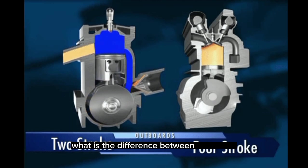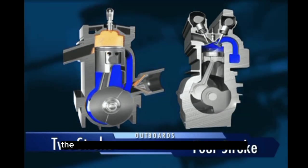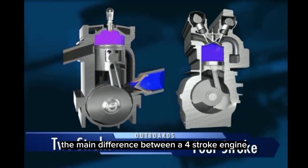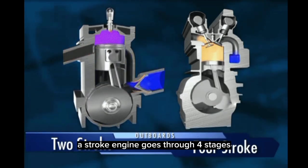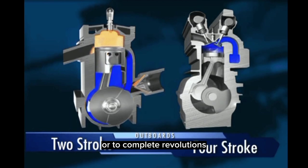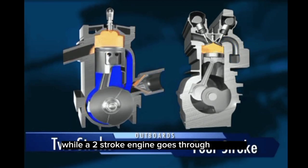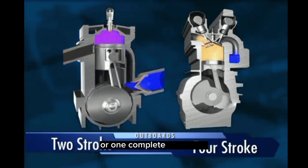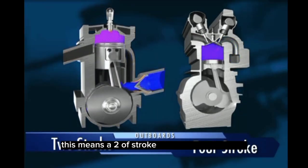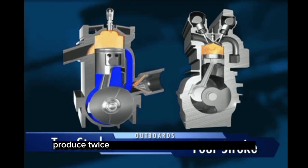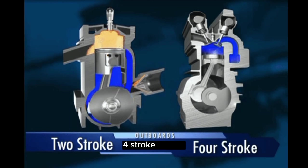The main difference between a four-stroke engine and a two-stroke engine is that a four-stroke engine goes through four stages, or two complete revolutions, to complete one power stroke, while a two-stroke engine goes through two stages, or one complete revolution, to complete one power stroke. This means a two-stroke engine can potentially produce twice as much power as a four-stroke engine and also weigh less.